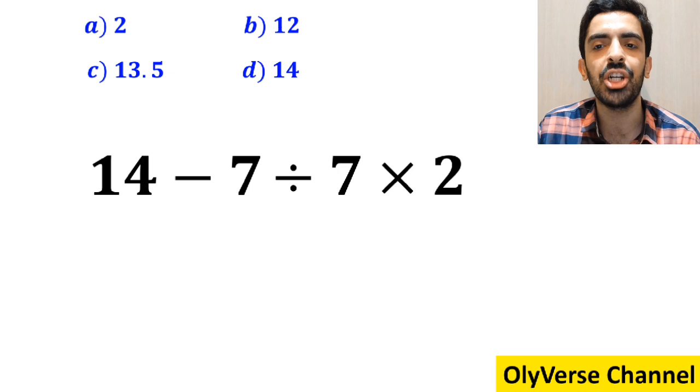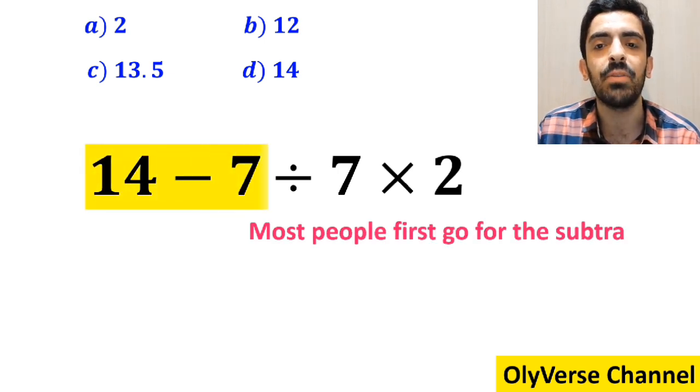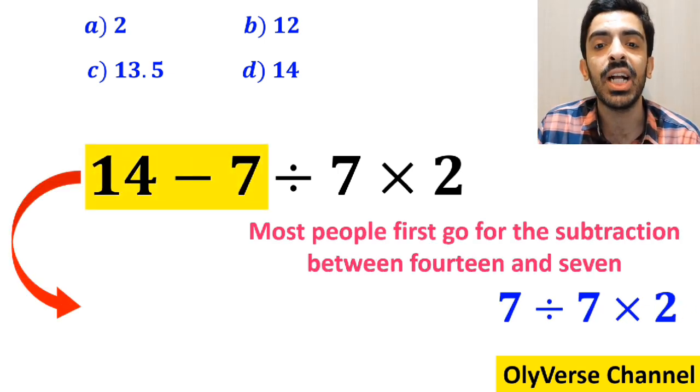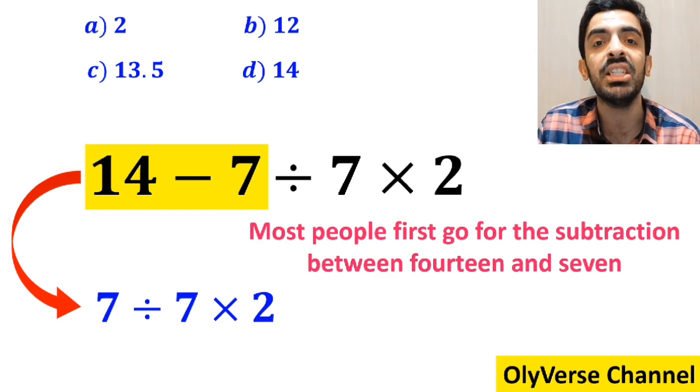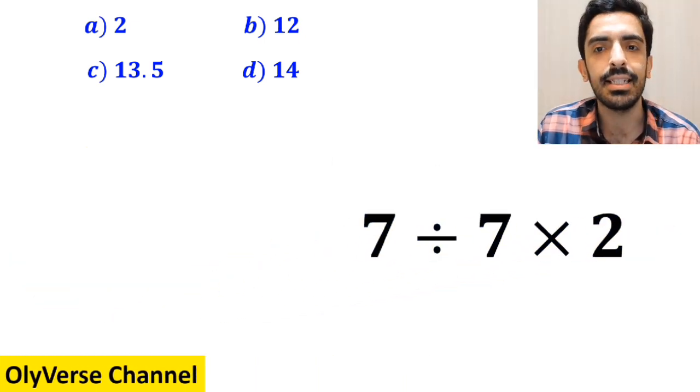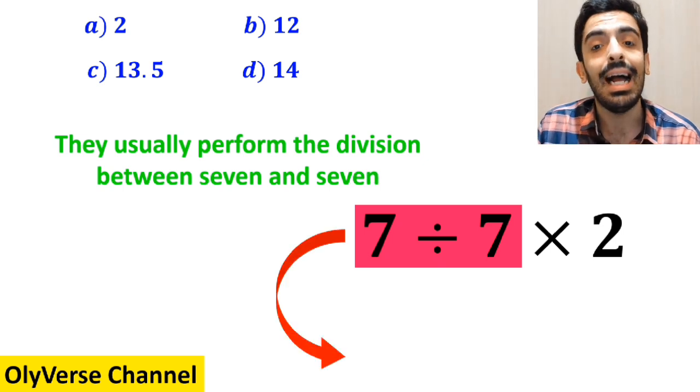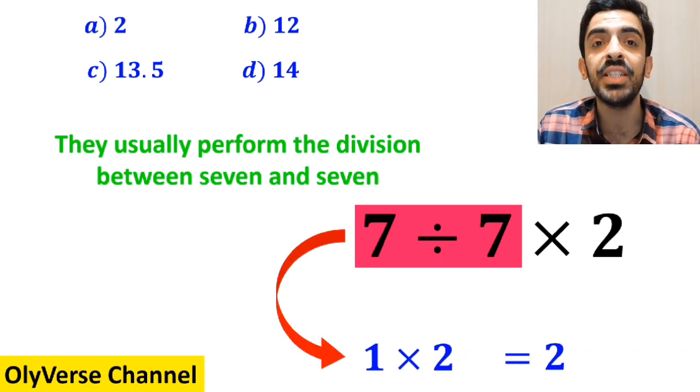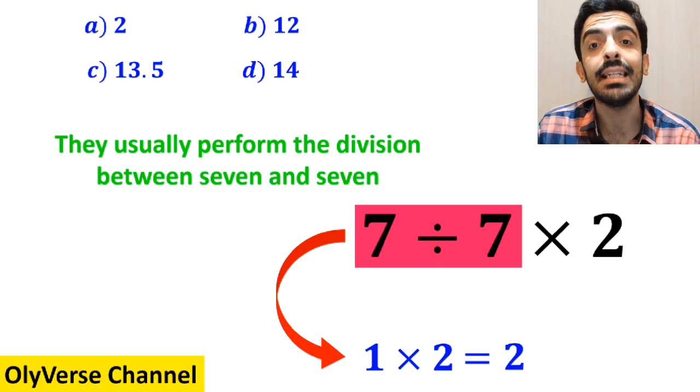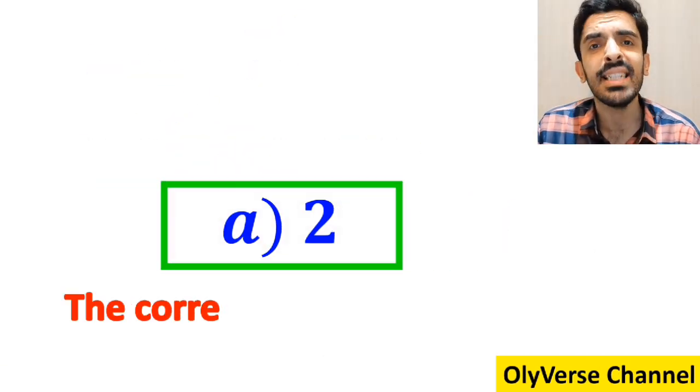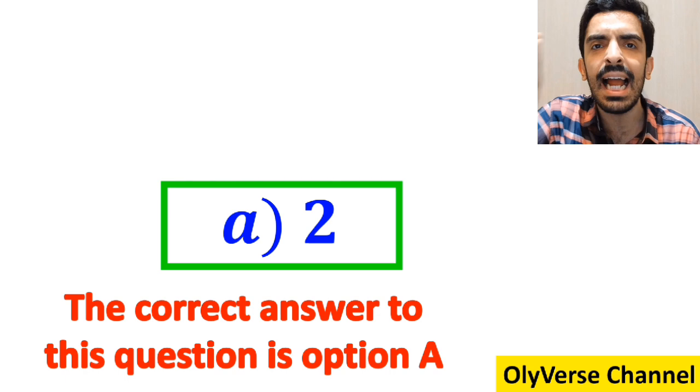To solve this question, most people first go for the subtraction between 14 and 7 and they rewrite it as 7 divided by 7 then times 2. The next step, they usually perform the division between 7 and 7, simplifying this expression to 1 multiplied by 2, which finally gives them the answer 2. Immediately, they say that the correct answer to this question is option A.